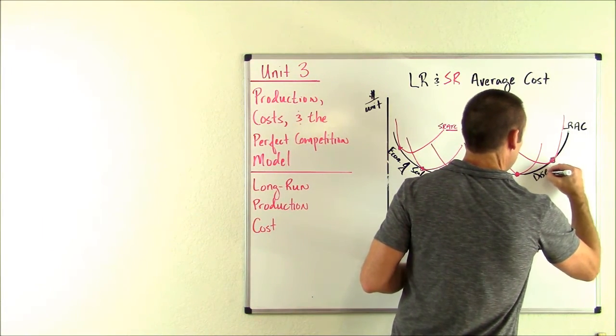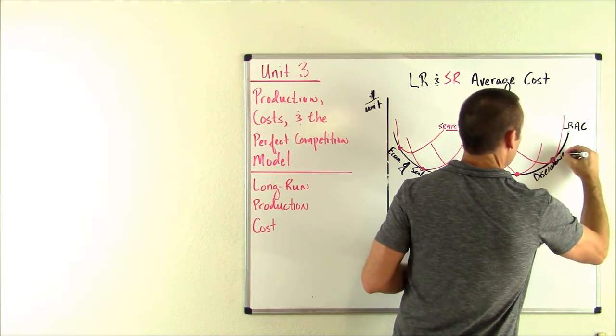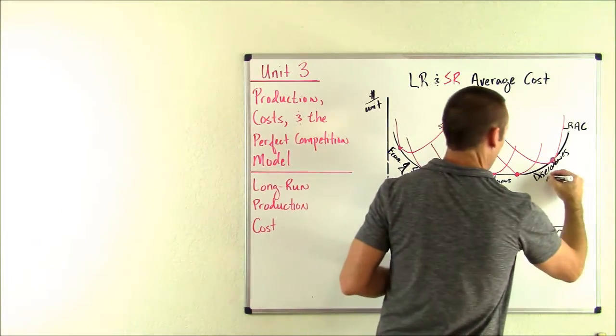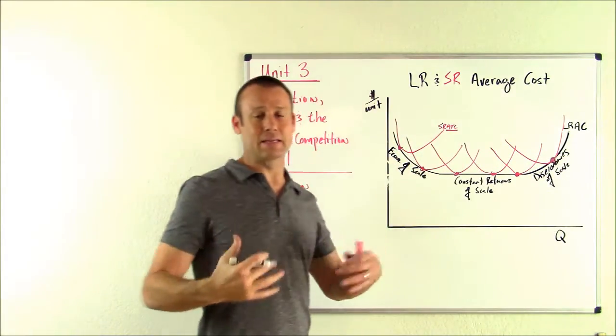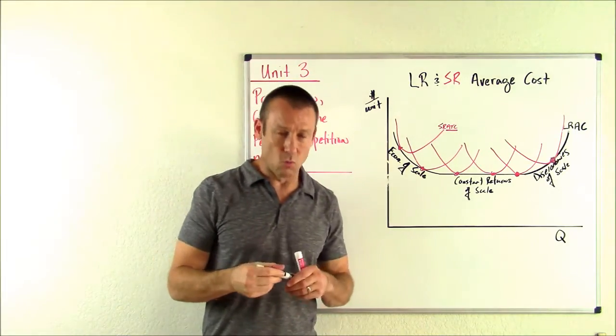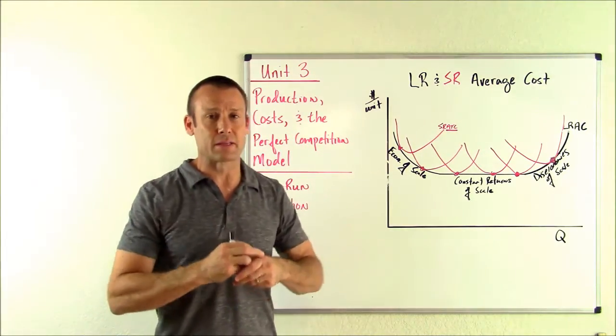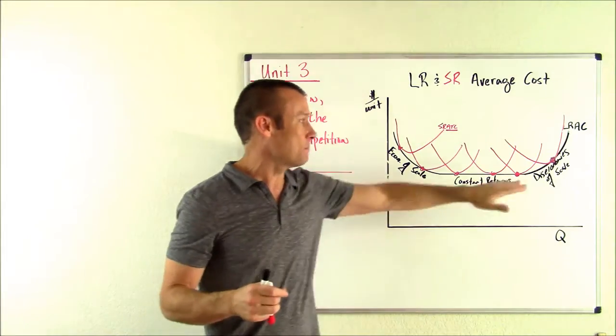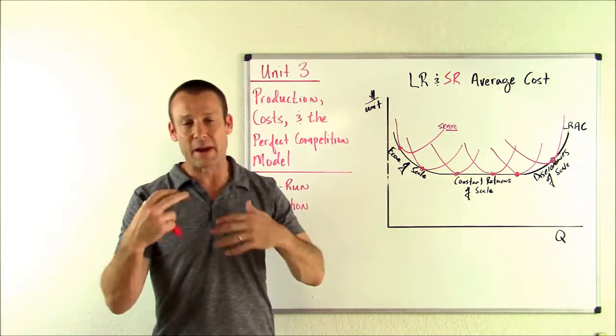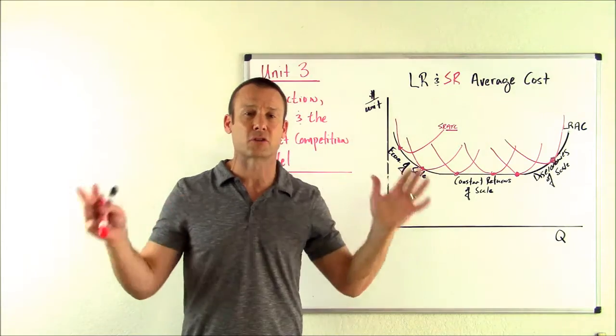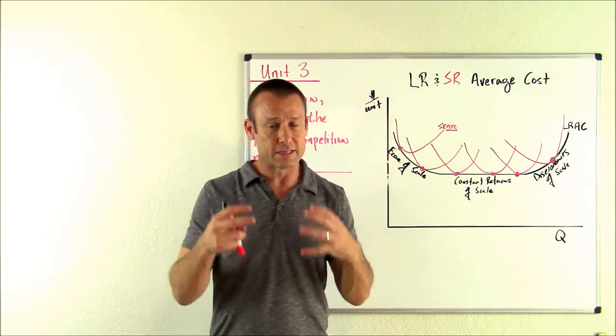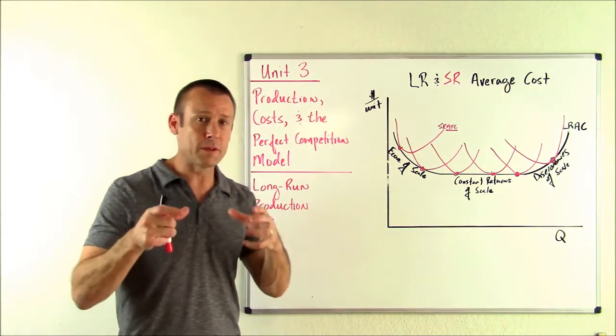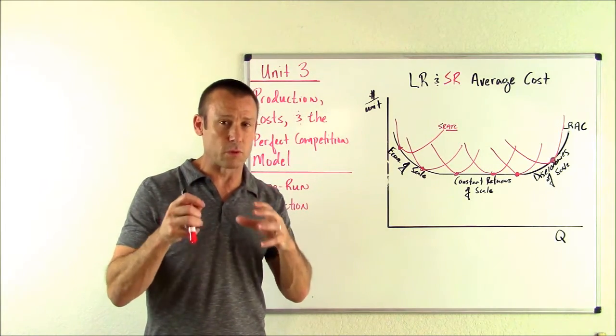And then diseconomies of scale. So you might have a little bit of questions about this one. What's going on here? Well, guys, plant size can get too big. We don't want a manufacturing plant the size of Wyoming. At some point, bureaucratic costs and management costs just get too big. It's too hard to manage. Your scale is too big. So you actually start getting diseconomies of scale.